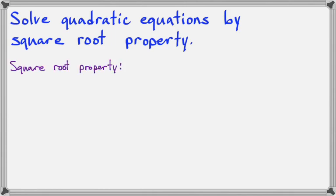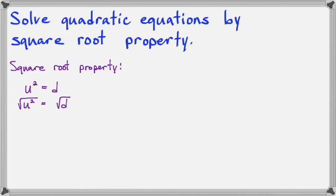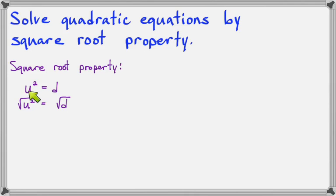Let me show you what the property says. If you have a number squared that's equal to another number — for example, 9 squared equals 81 — then you can do the square root of both sides. You can do whatever you want to an equation as long as you do it to both sides. When you do the square root of both sides, you have to insert a positive/negative symbol, because you don't know if what got squared was the positive or the negative version of the number. So we put the plus/minus symbol here.